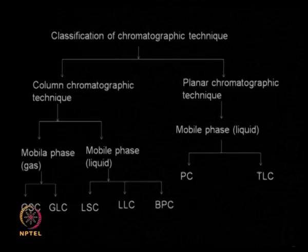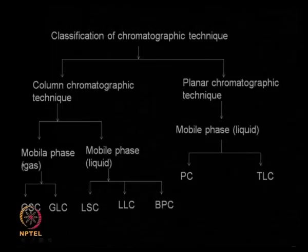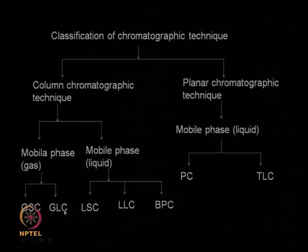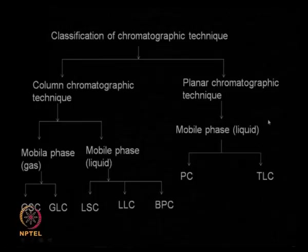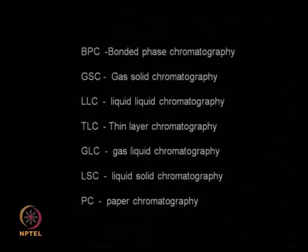Organic chemists have been using chromatography for a very long time. In column chromatography, there is a column with a mobile phase and a stationary phase. The mobile phase can be a gas — giving gas-solid or gas-liquid chromatography — or a liquid, giving liquid-solid or liquid-liquid chromatography. If you look at the stationary phase, it could be a bonded phase; you can have gas-solid, liquid-liquid, gas-liquid, or liquid-solid combinations, so different types of chromatography are possible.